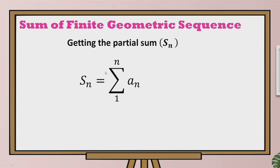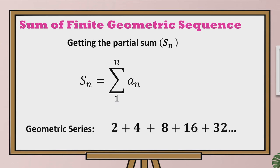In getting the sum of a finite geometric sequence, we get the partial sum which is denoted by S sub n. S sub n means the sum of all the terms in a geometric sequence starting from the first term up to a certain position n. Let's say we have this geometric series and we are to find the sum of its first two terms.